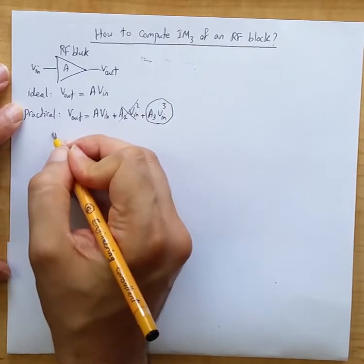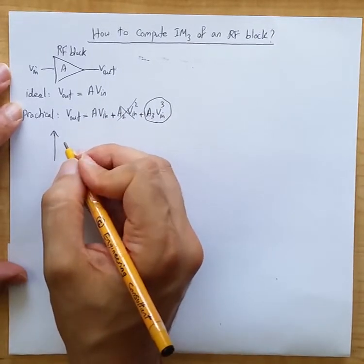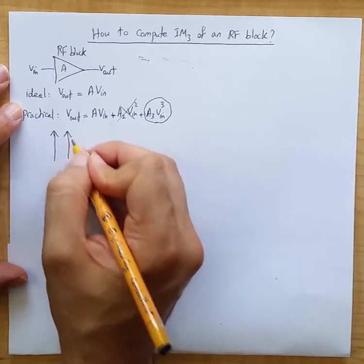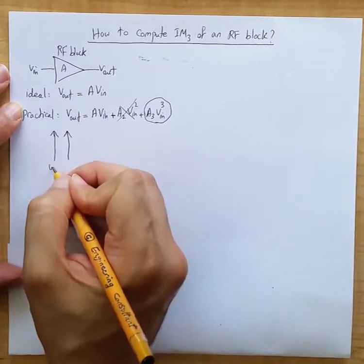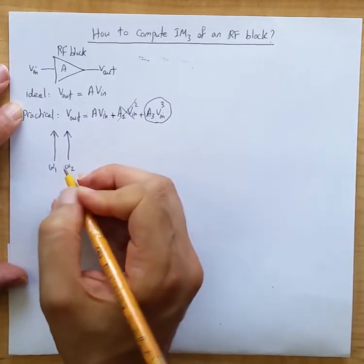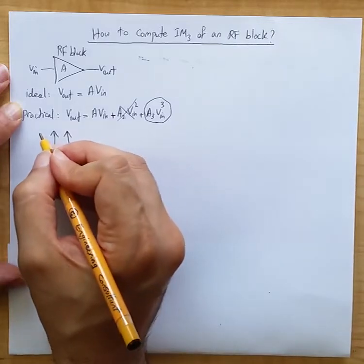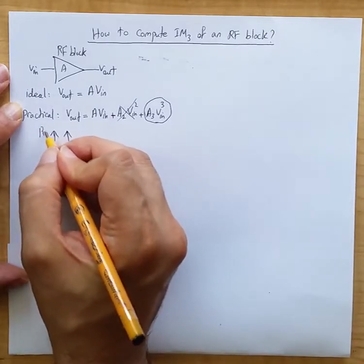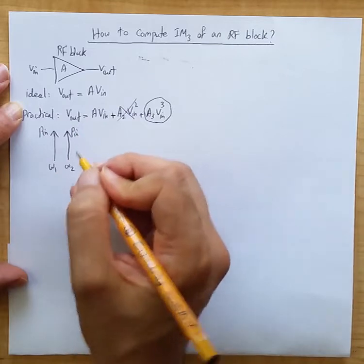The idea is if you apply a two-tone, two sinusoidal tones at omega 1 and omega 2 frequencies. Let's say for now a power PN and the same power for the other guy PN.